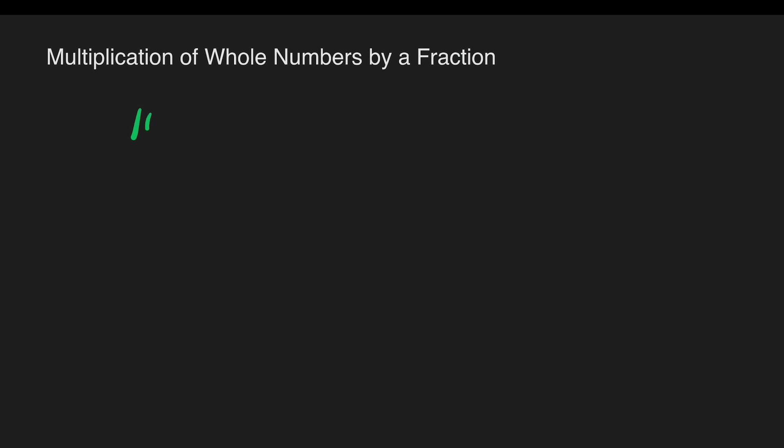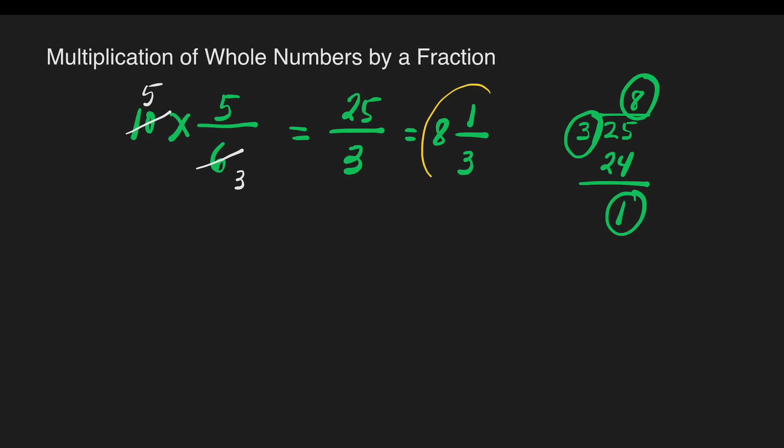Another example is 10 times 5 sixths. Is there something that we can cancel? Yes. 10 and 6. We can divide it by 2. 10 divided by 2 is equal to 5. 6 divided by 2 is equal to 3. Then we can already proceed to multiplication. 5 times 5 is equal to 25, then copy 3. This is an example of an improper fraction. So we can change it into mixed number. 25 divided by 3. How many 3's are there in 25? There's 8. 8 times 3 is equal to 24. You can subtract. 25 minus 24 is equal to 1. 8 here will become our whole number. The 1 will become our numerator. And the 3 here will become our denominator. So our answer is 8 and 1 third.